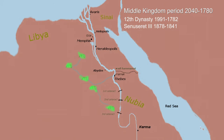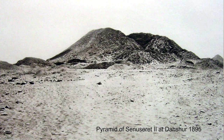Senusret III also built a summer palace at Avaris, a city in the eastern Nile Delta that was later renamed Pai Ramses during the New Kingdom period — well known as the site of the exodus of the Israelites from Egypt. He also built his pyramid with secret passages, hidden doors, and false ceilings to hide the location of his actual tomb.